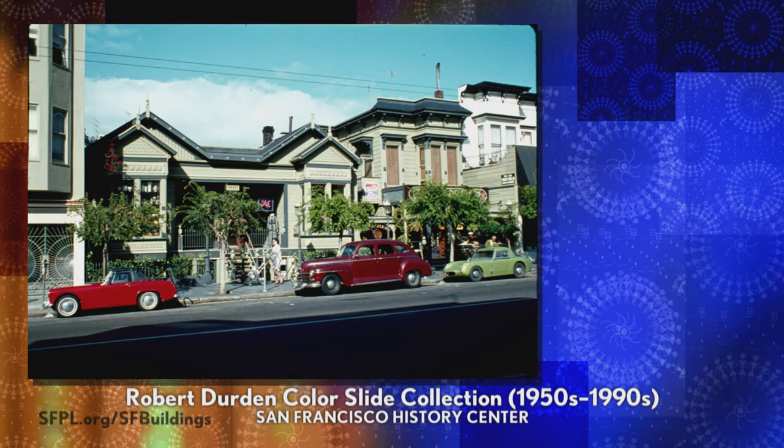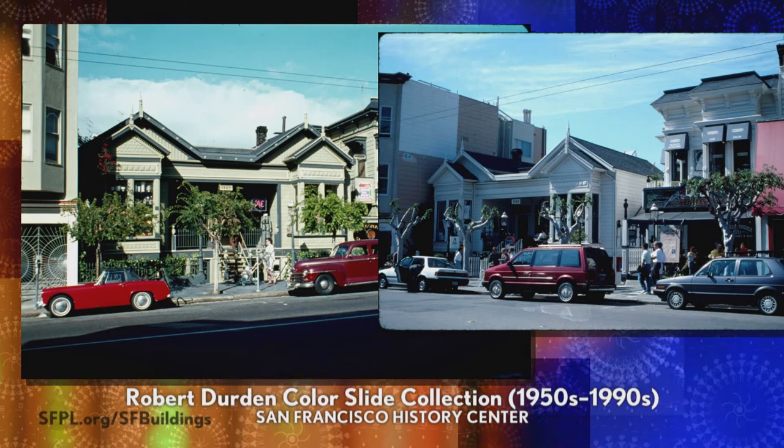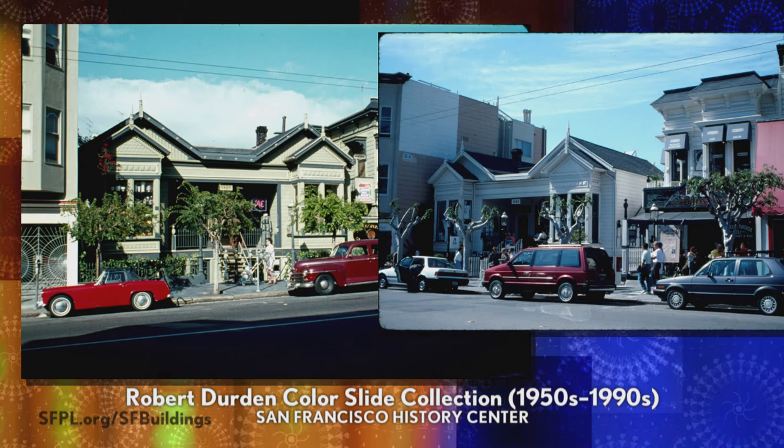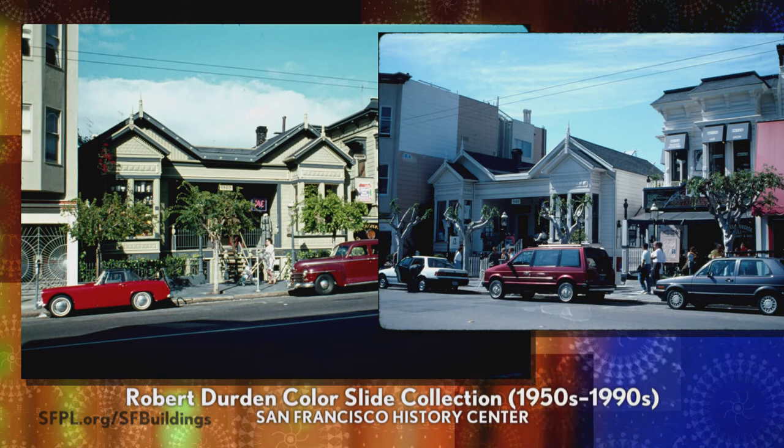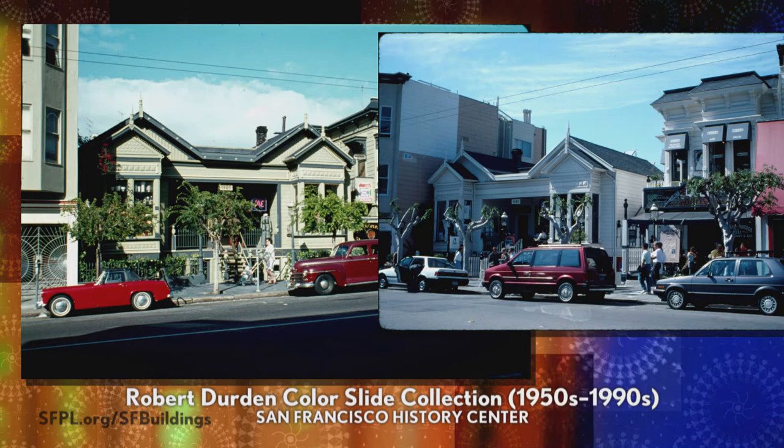Another collection is the Robert Durden Color Slide Collection. Robert Durden was a local San Francisco resident and architectural enthusiast who went around surveying properties with his camera for about 40 years — a big chunk from the 1980s and '90s. For these you get no white gloves, but you get a little loupe to view them and the light box, since they're all in slide format.